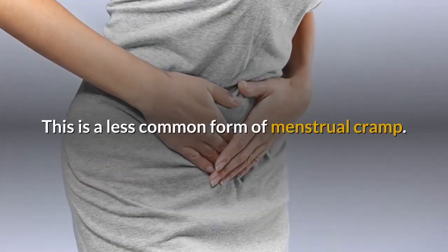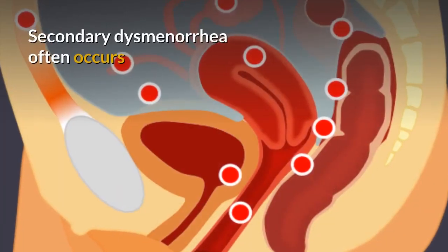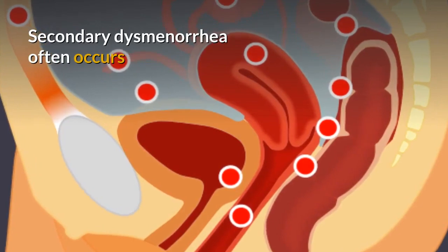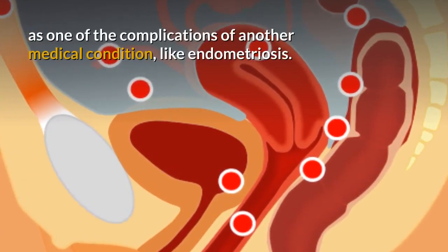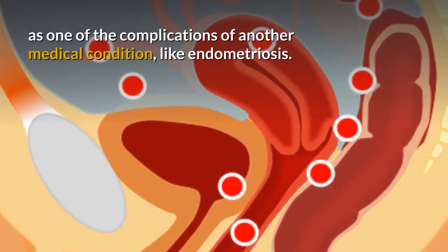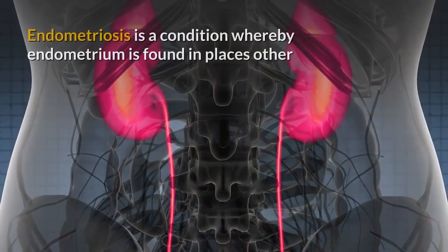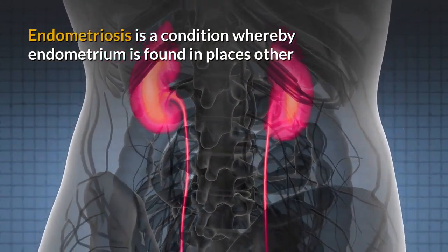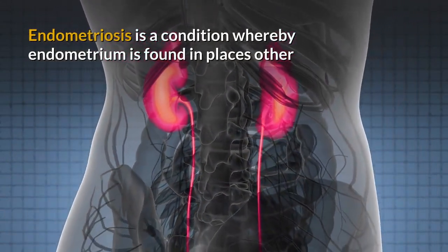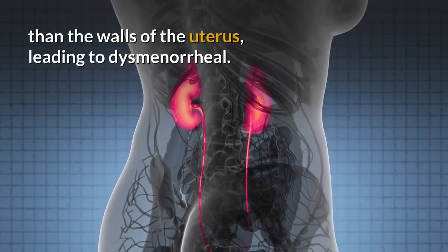Secondary Dysmenorrhea is a less common form of menstrual cramp. It often occurs as one of the complications of another medical condition, like endometriosis — a condition whereby endometrium is found in places other than the walls of the uterus, leading to dysmenorrhea.